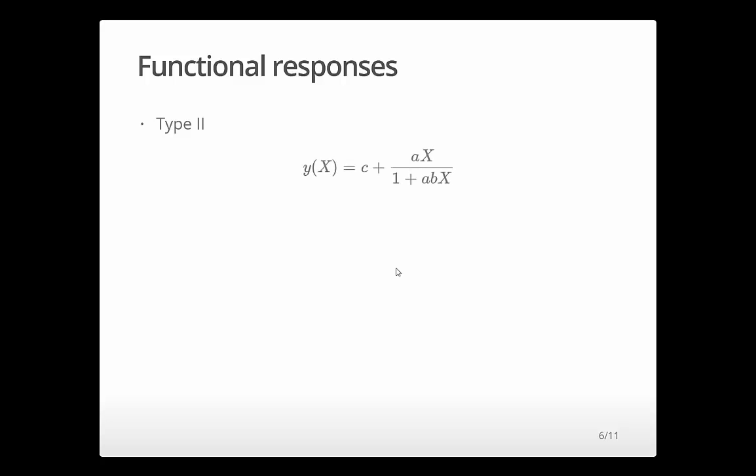So typically we've got two types of functional responses. Here's a Type 2 functional response. So Y is the number of prey consumed per predator, X is the number of prey. Ignore the C for a moment. The classical Type 2 response is just this part here, without the C. A is the attack rate, how fast per unit time the predators are attacking. And B, or 1 over B rather, B is the handling time. So 1 over B is the maximum rate at which predators can attack prey. C here is something that they tested in their model, which basically says there's some minimum number of prey that they'll eat, even when prey are very rare. It was one of the alternative models they tested.